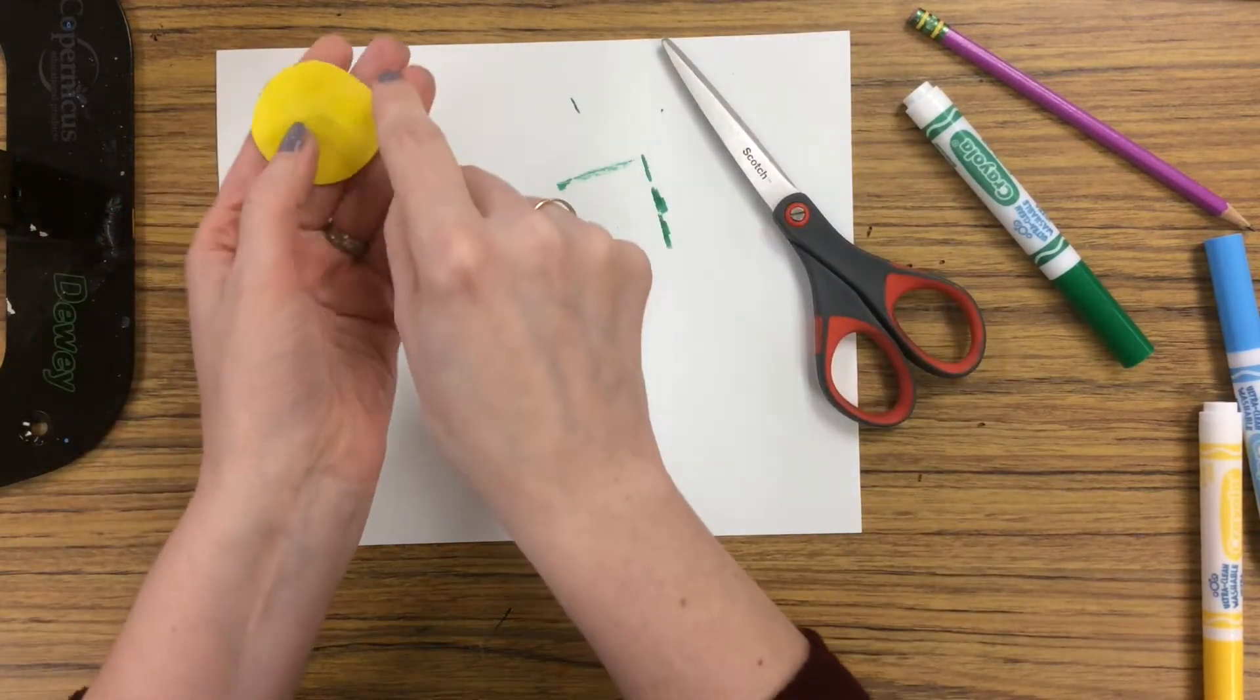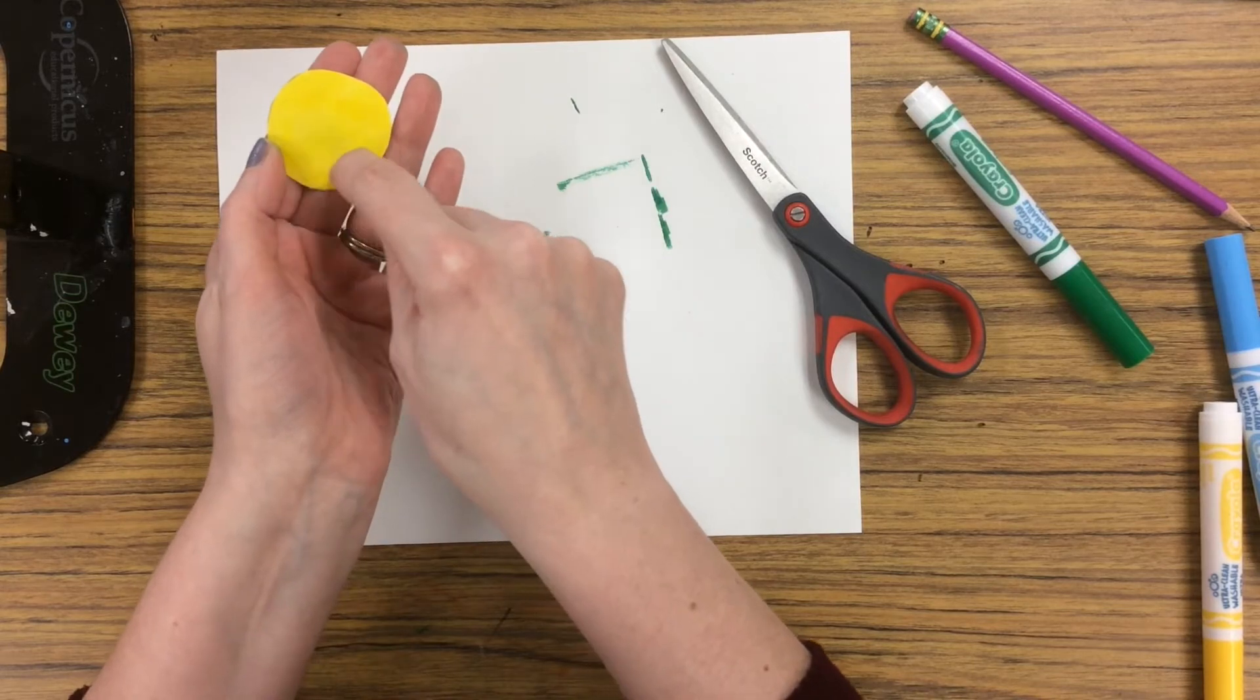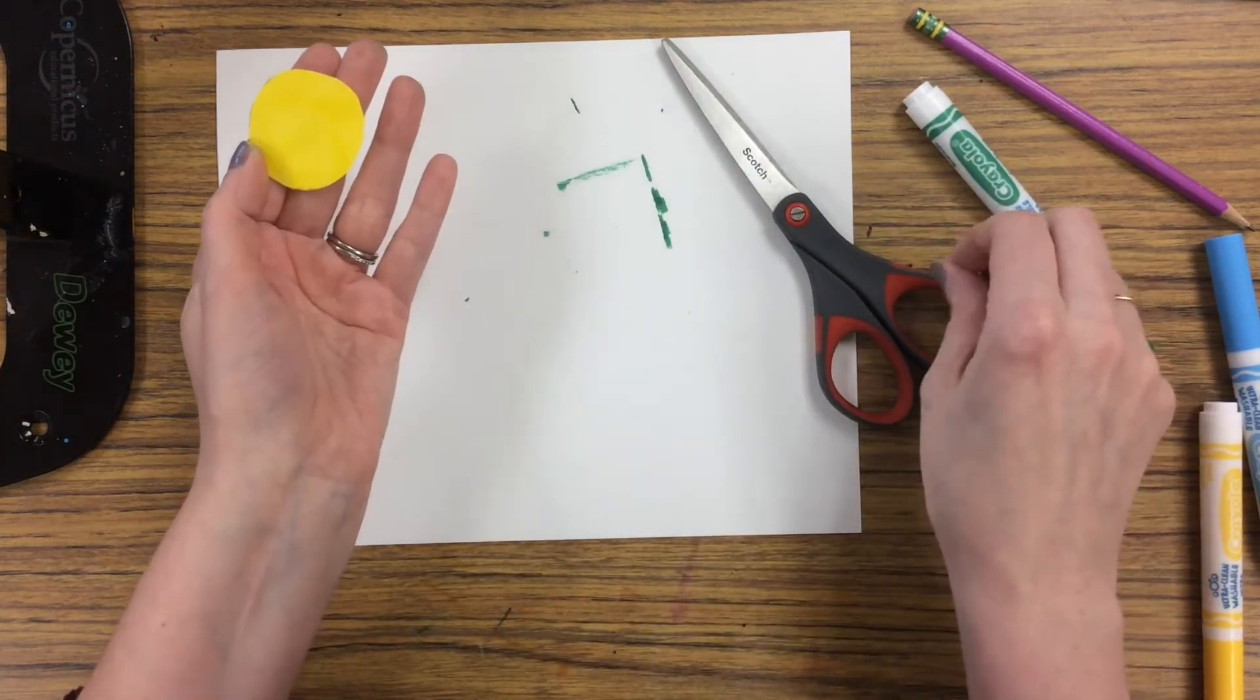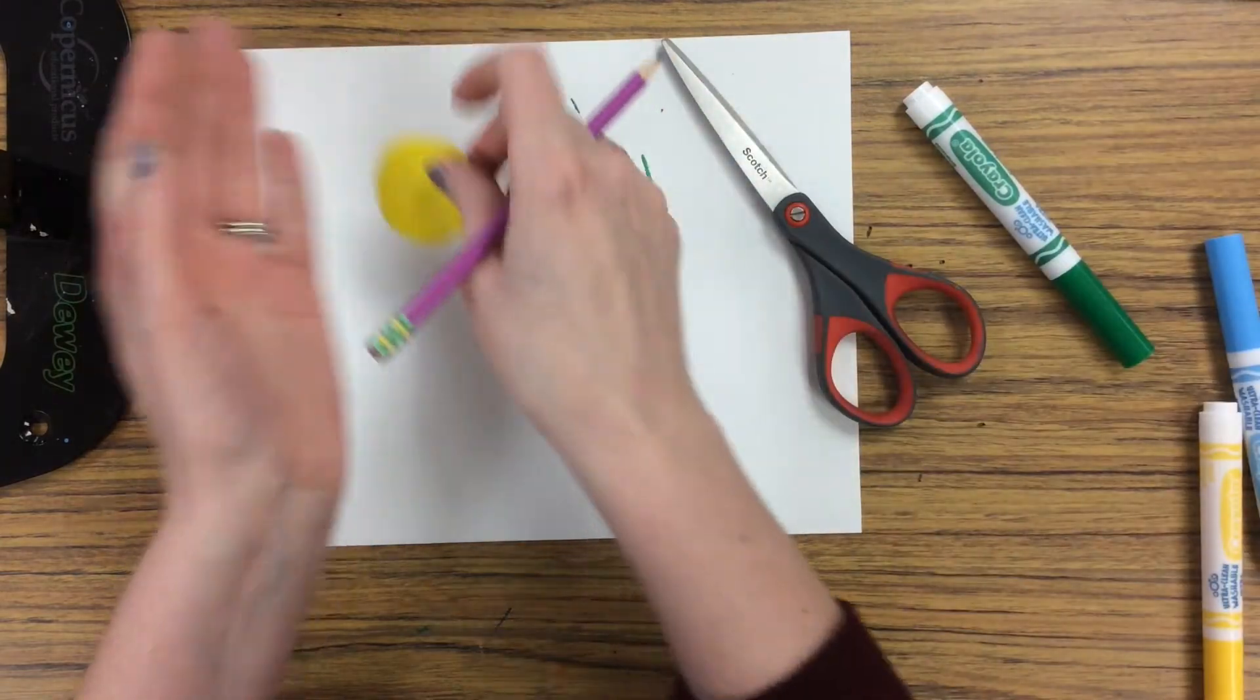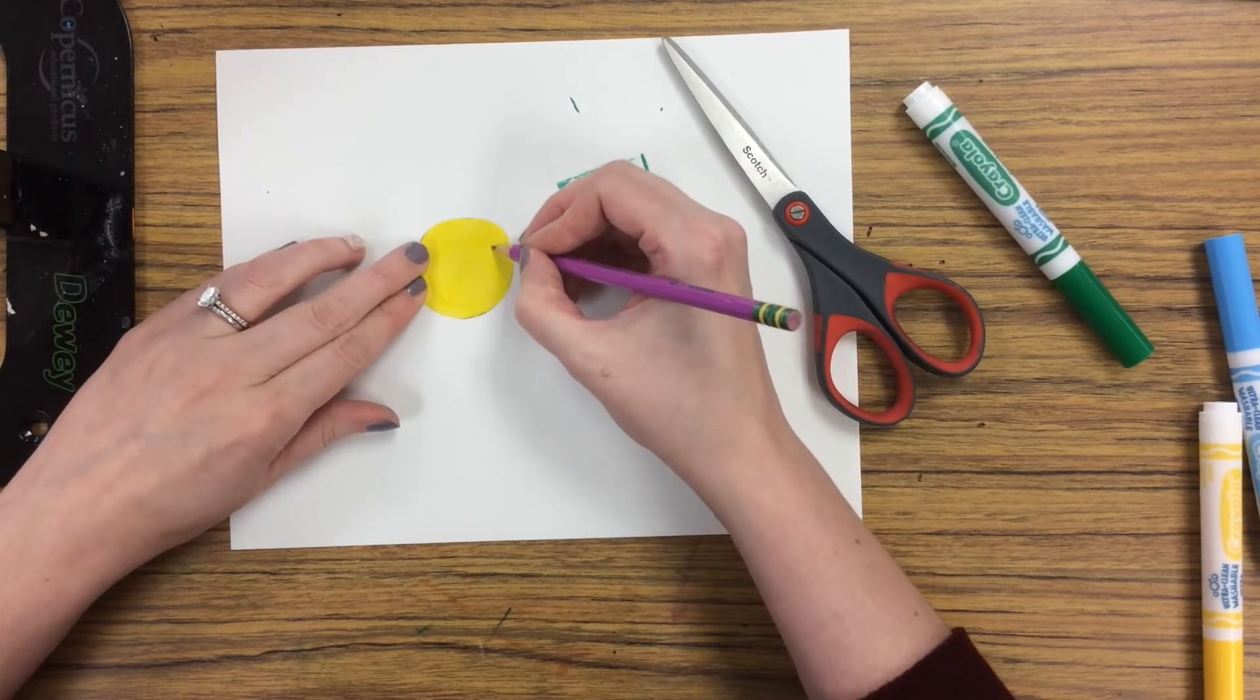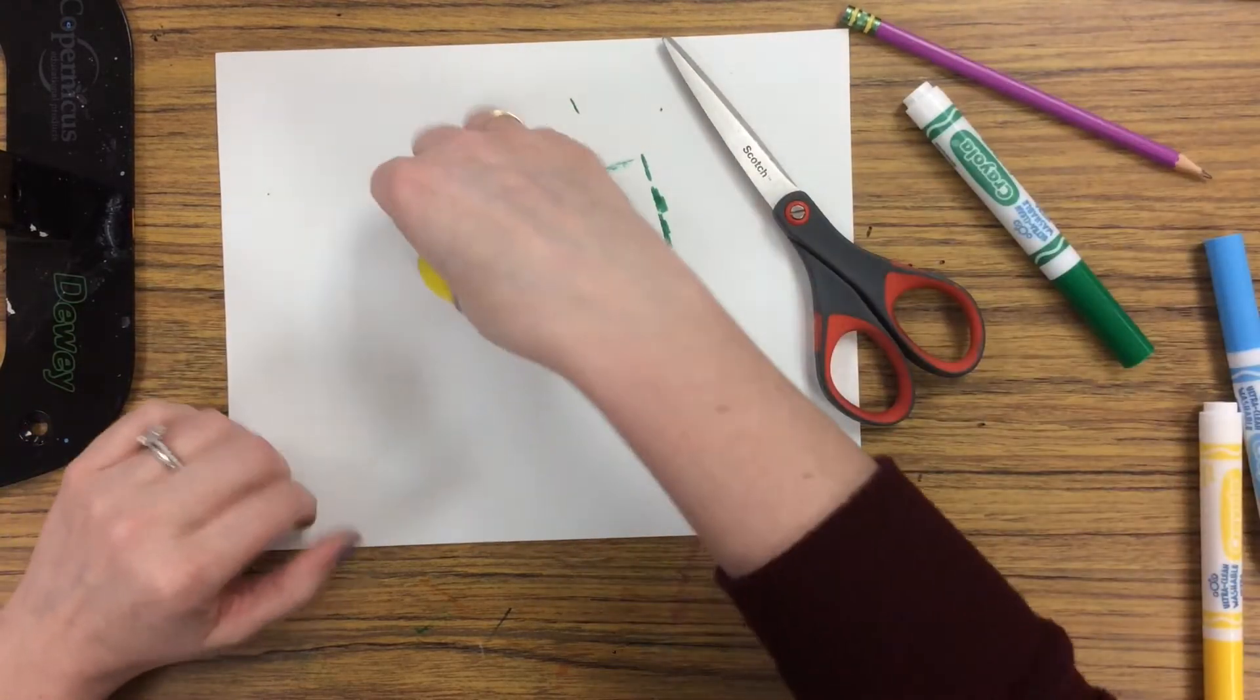So what you're gonna do is we're gonna start cutting right next to the edge. And we're cutting in a little spiral going smaller and smaller as we get towards the center. If it's easier, then you can lightly draw this with pencil so that you have something to cut on like that. So whatever you're more comfortable with.